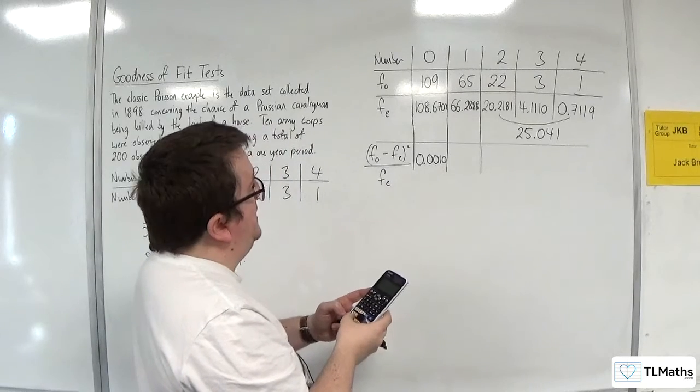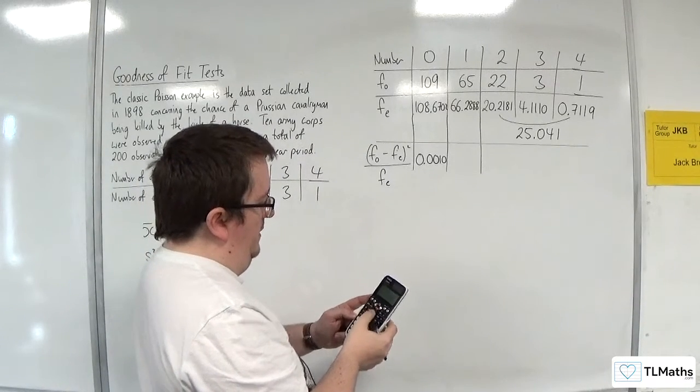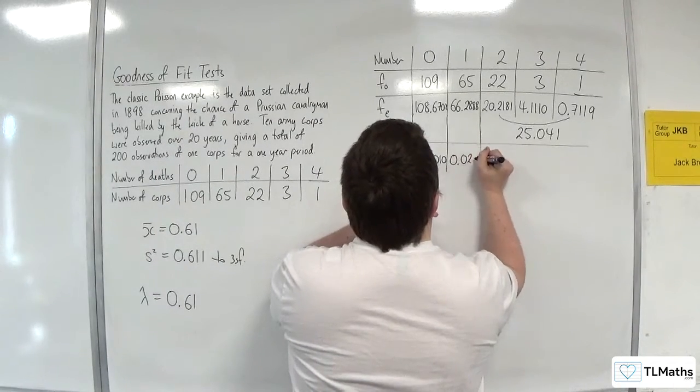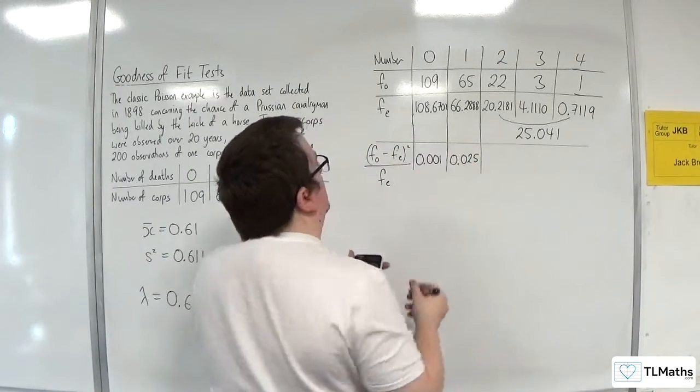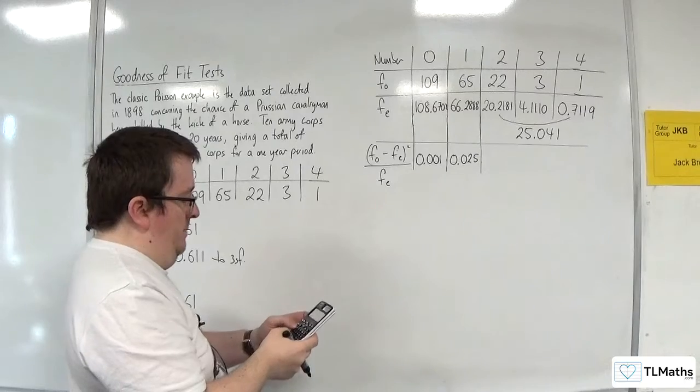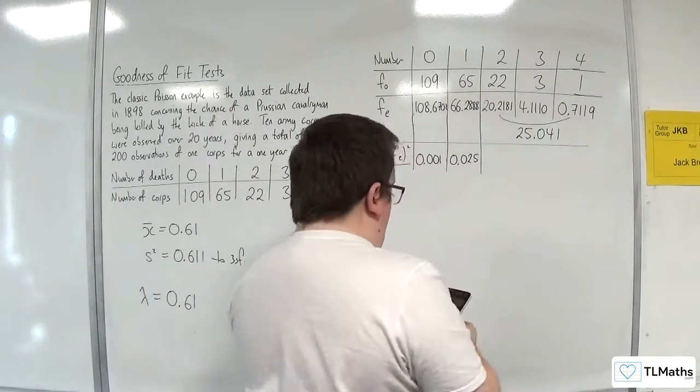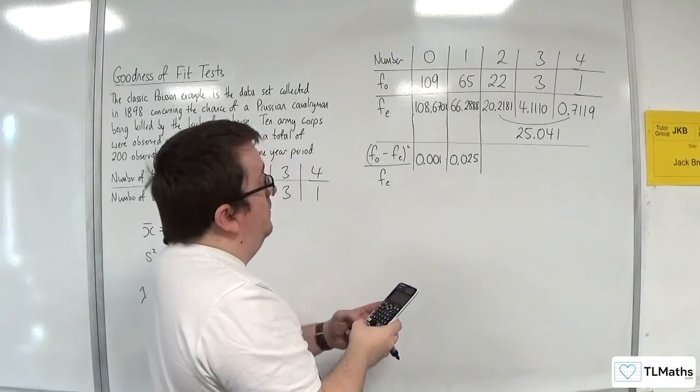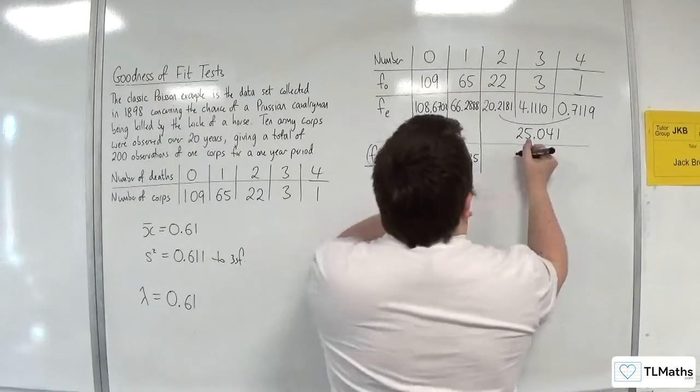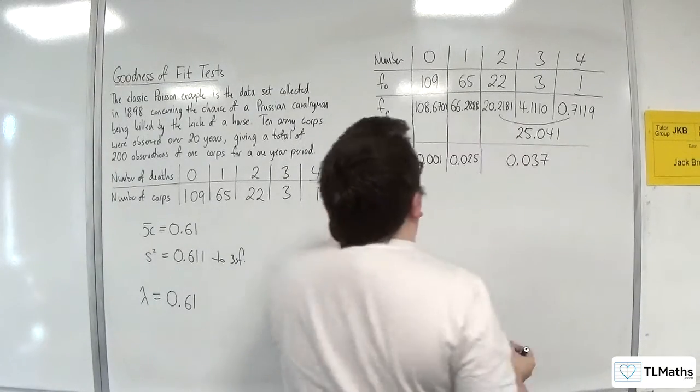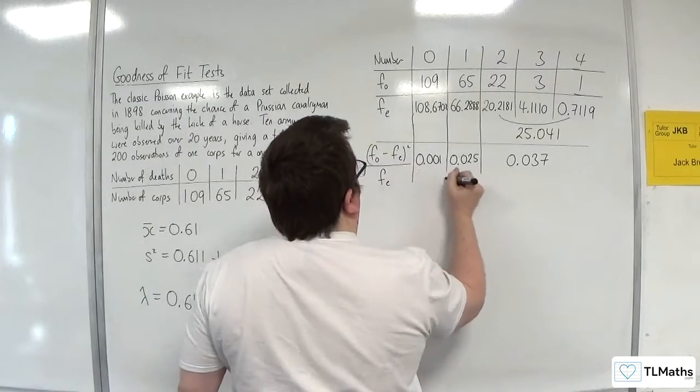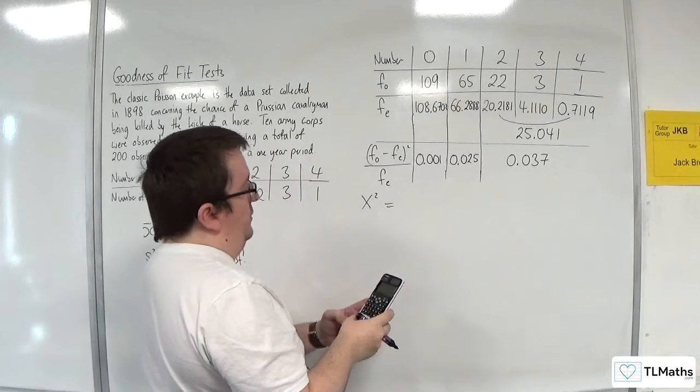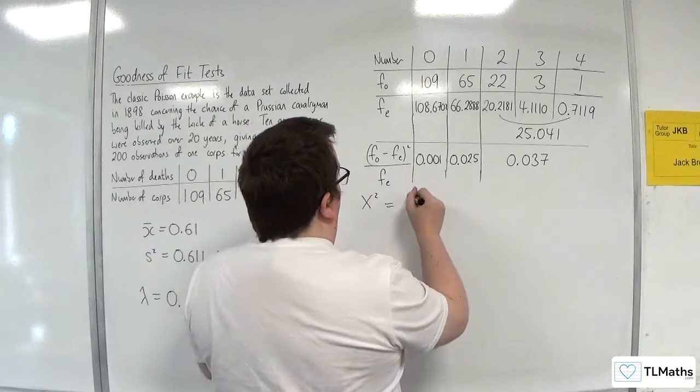Then we've got 65 take away 66.2888 squared divided by 66.2888. So 0.025. Let's do it to three decimal places. And then the last one, we've got 22 take away 25.041 squared divided by 25.041. And we're getting 0.037. So chi squared would be the sum of those three. 0.001 plus 0.025 plus 0.037. And we get 0.063.